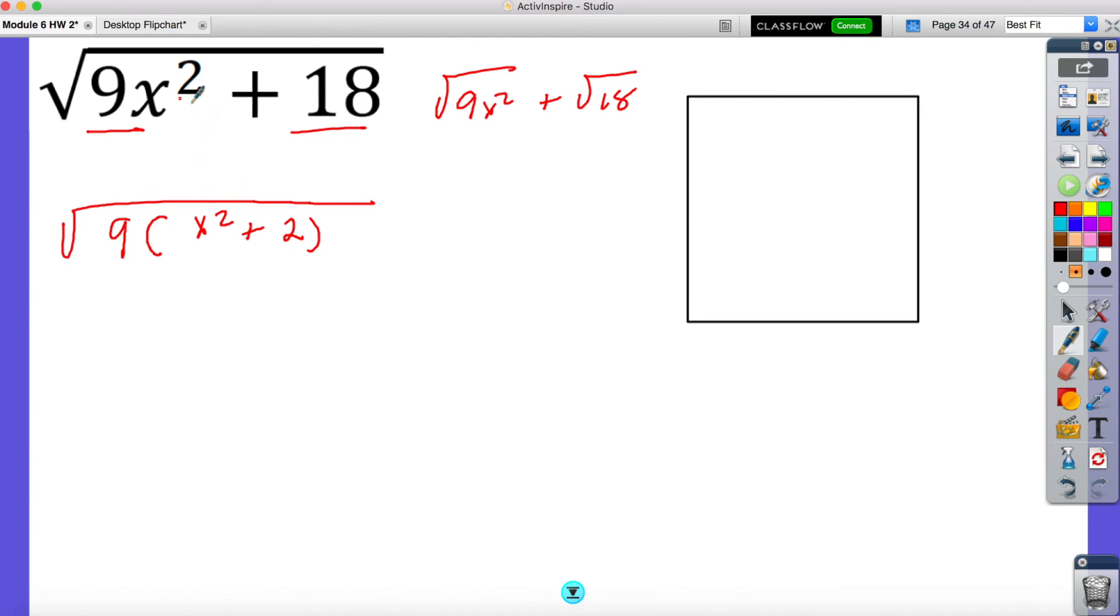So if I have the square root of 9 times x squared plus 2. I want you to notice what I did there. I pulled out a 9. I divided both of these by 9. And now it's out here. So if I were to distribute, I would get that back. Now that I have a multiplication sign, I can break these up into my two square roots. So I'm going to have the square root of 9 times the square root of x squared plus 2. So the square root of 9 is 3. And then I can't take the square root of x squared plus 2. Remember guys, a big mistake is students are going to try to take the square root of x squared. Do not do that. Just leave it how it is. And this is your final answer.